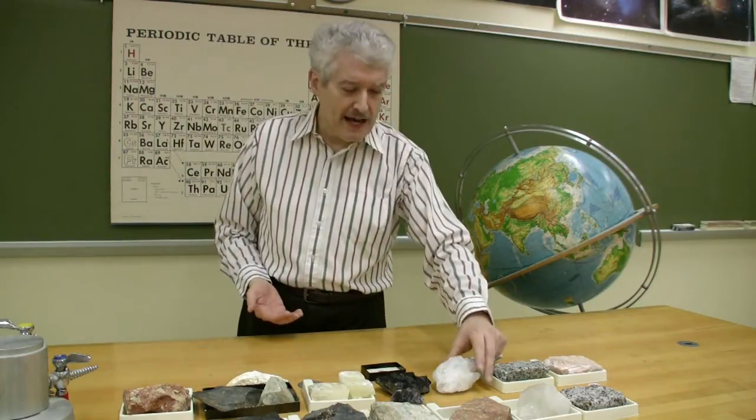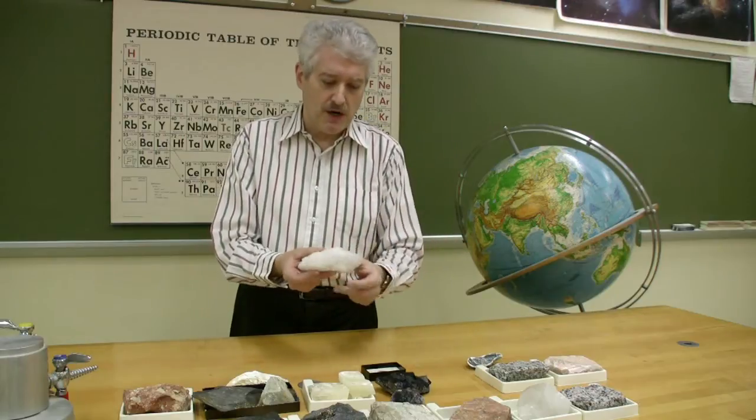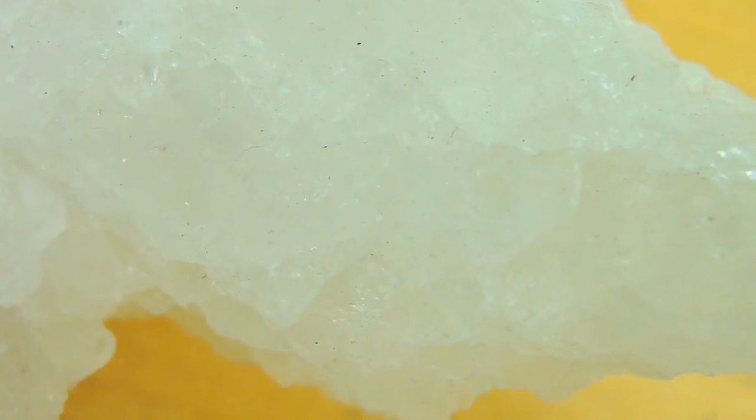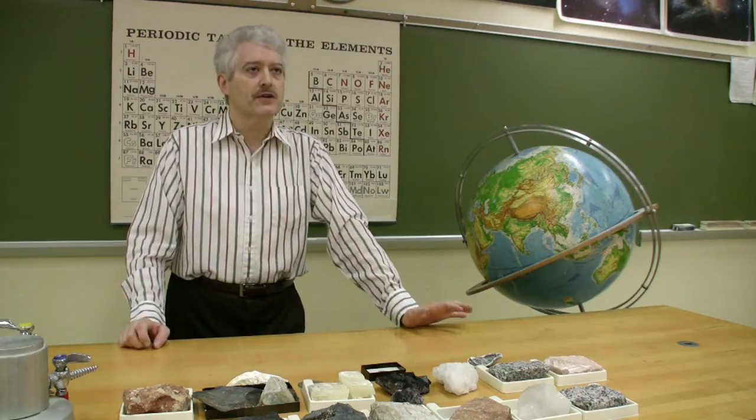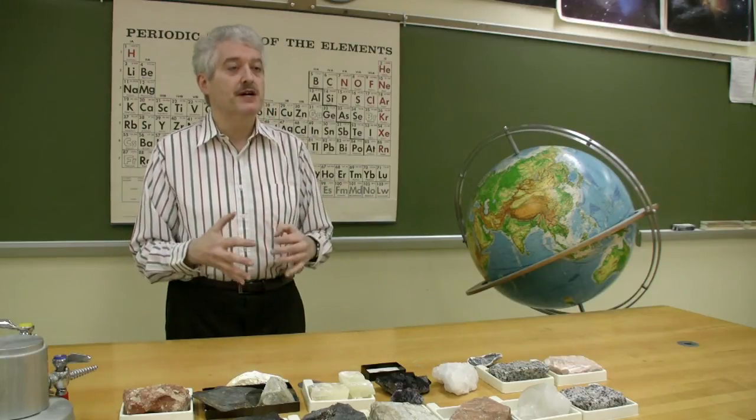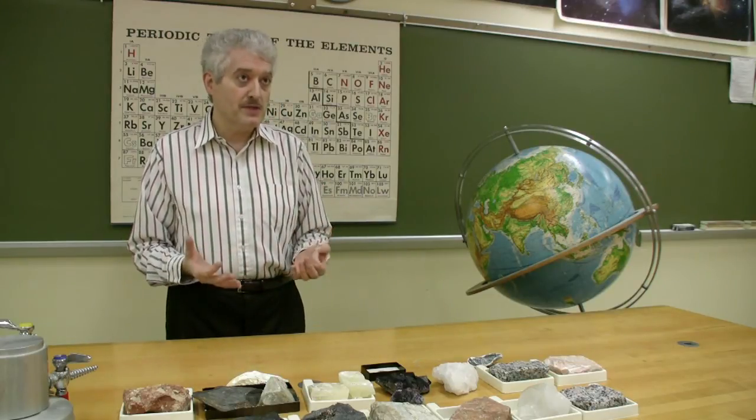So as we look at minerals in nature, this is some rock salt which would have cubic crystals although they're not well preserved here, that's sodium and chlorine. As we look at all the minerals that occur in nature, we see all different shapes of crystals, arrangements of the metal and the other elements that are present in them.